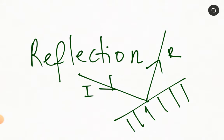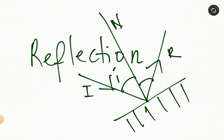We said that the angle between the normal and the incident ray is angle of incidence, and the angle between the normal and the reflected ray we call it angle of reflection. The angle between the incident ray and the reflecting surface we call it glancing angle, which is also the same as the angle between the reflected ray and the reflecting surface, they call it G. The normal is perpendicular to the reflecting surface.